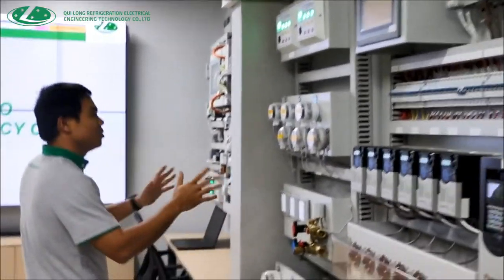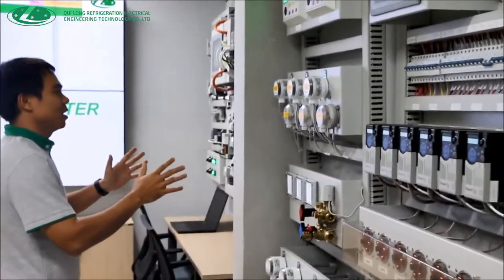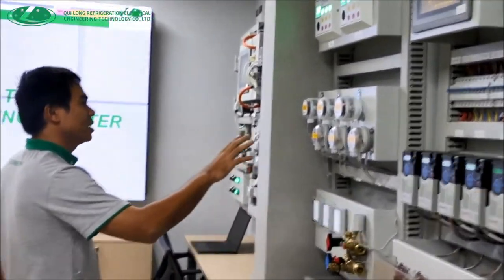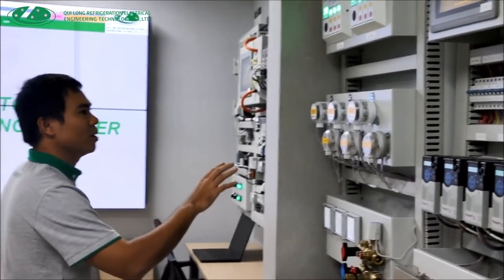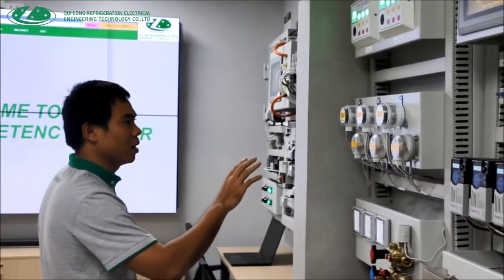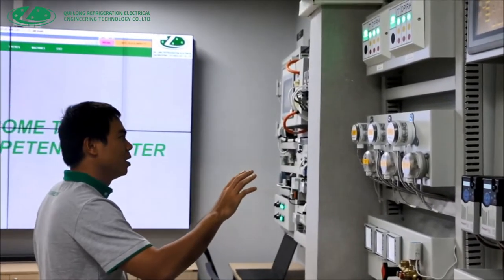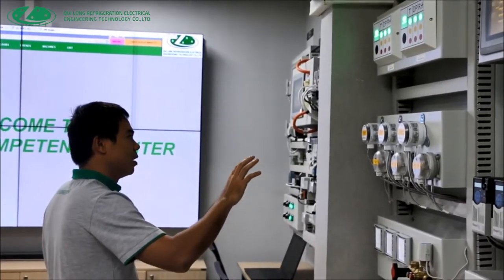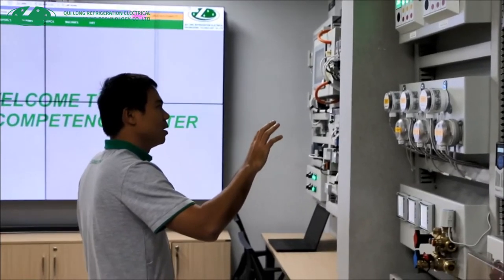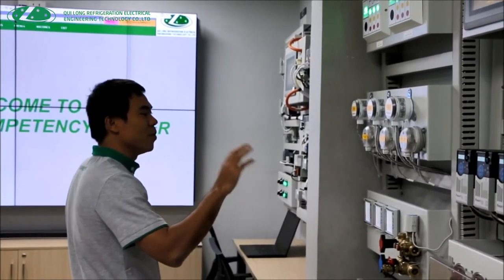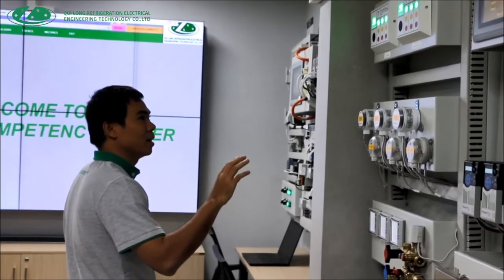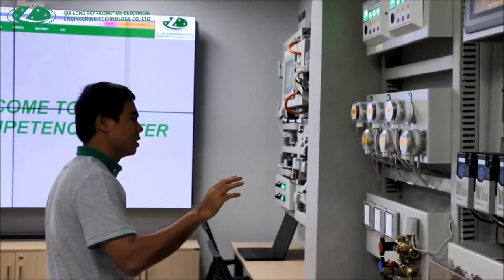The next one we have is the field device. This is the sensor list for the ASQ and also the clean room. We will have a pressure sensor and a fluid sensor at different pressures.